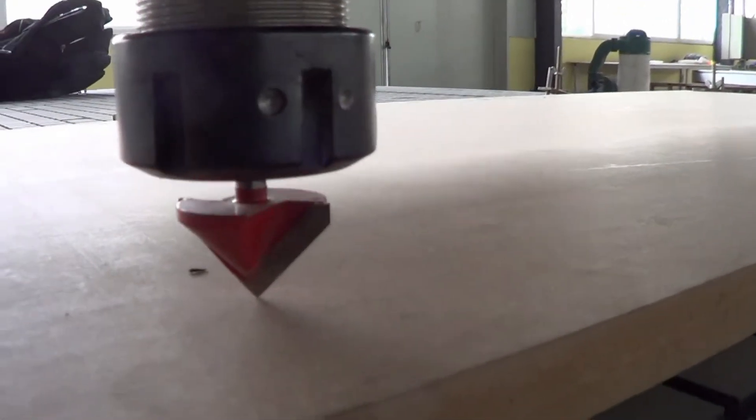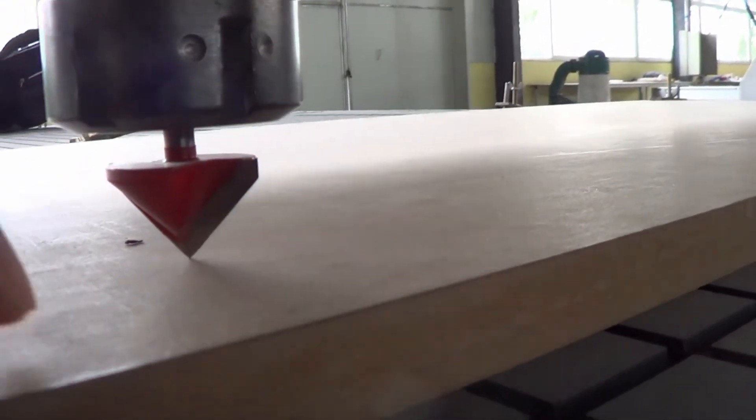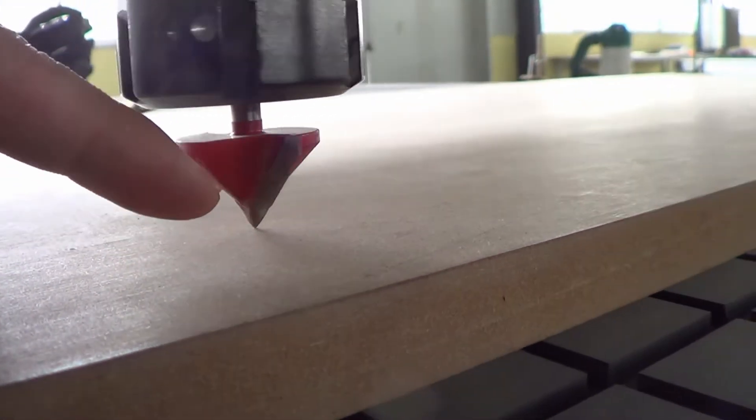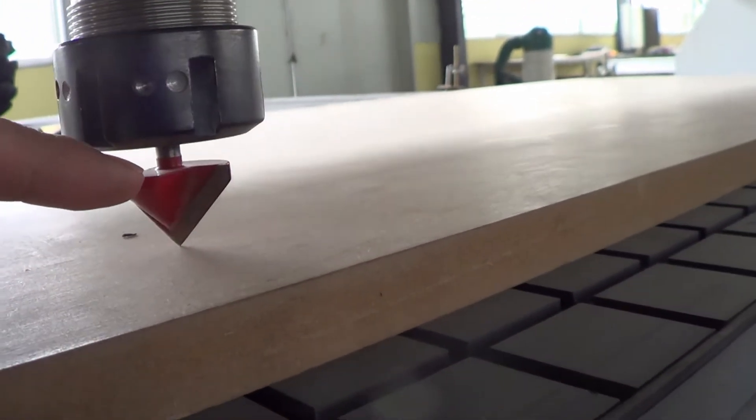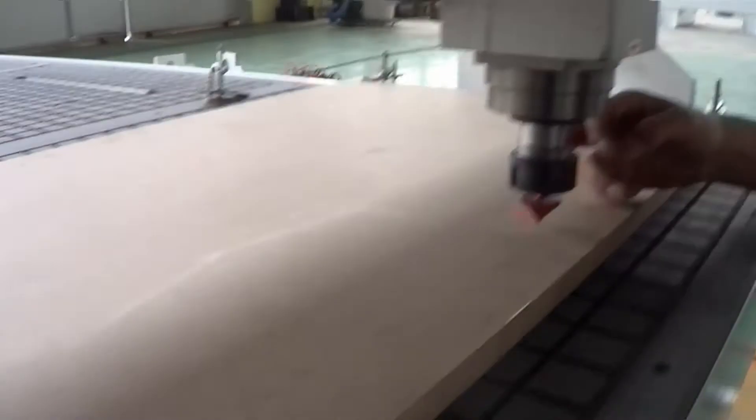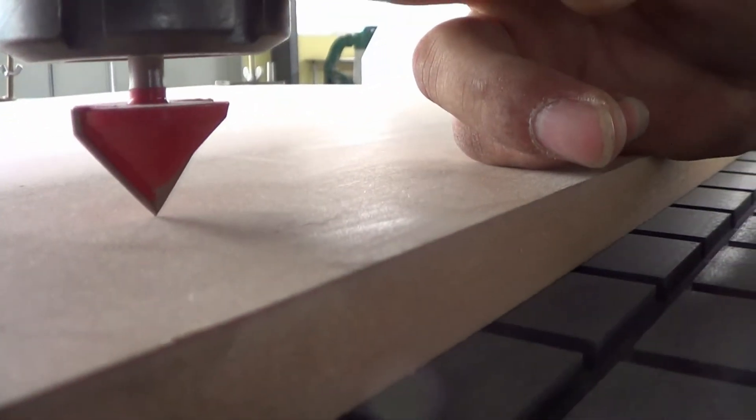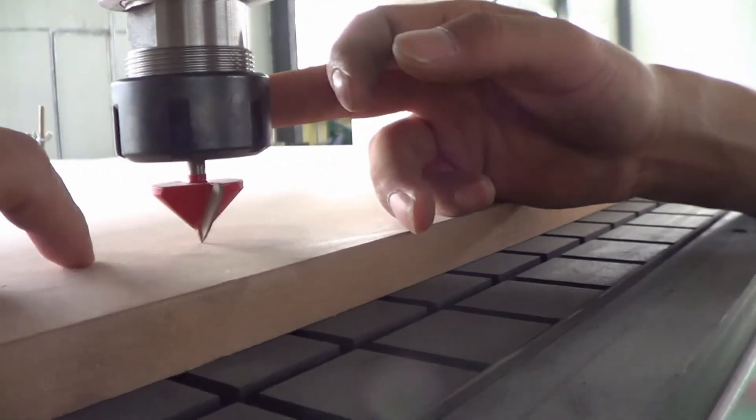Now we can see we've set the spindle 1 to the right top surface of our workpiece, and now we can set this to the start point of the spindle 1. But here now we can see that the spindle 2 still has a distance between the tool and the workpiece.